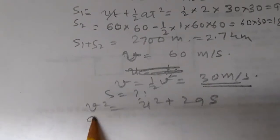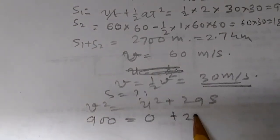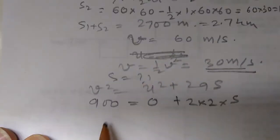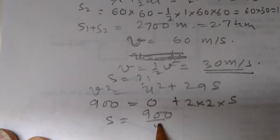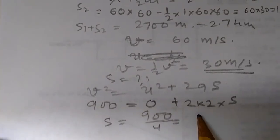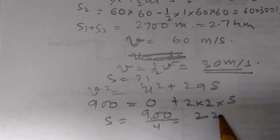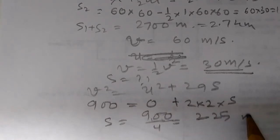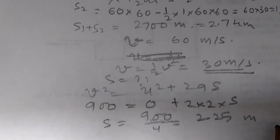Using v squared equals u squared plus 2as: final speed is 30 meters per second, so 900 equals 0 plus 2 times 2 times s, giving s equals 900 divided by 4 equals 225 meters. That is one answer to Part C.